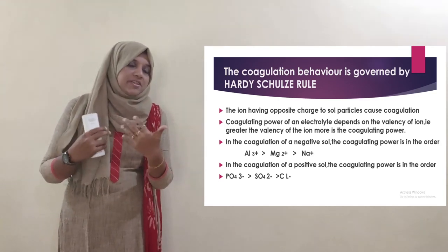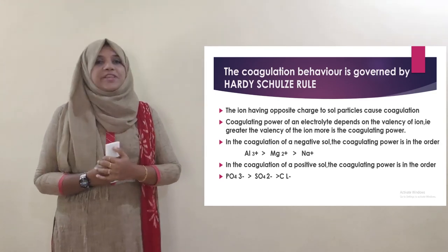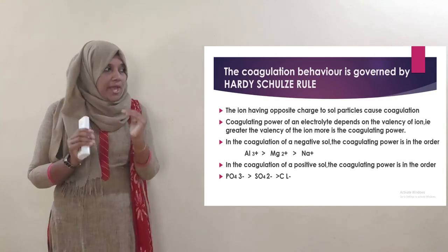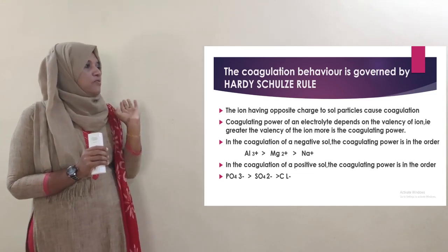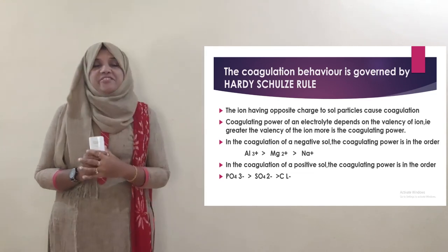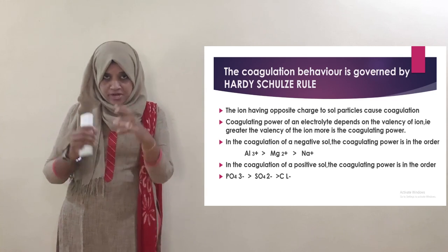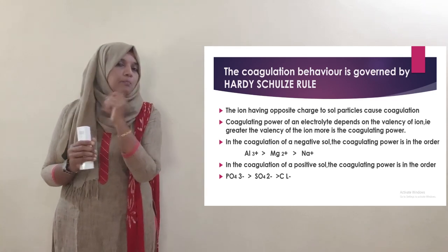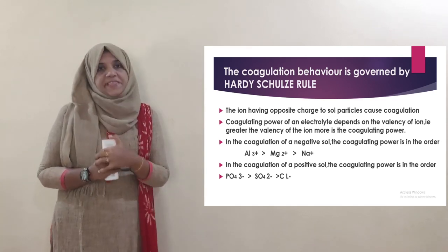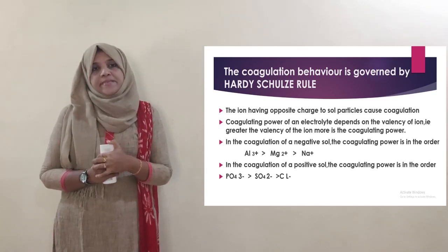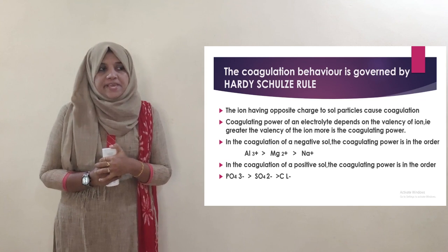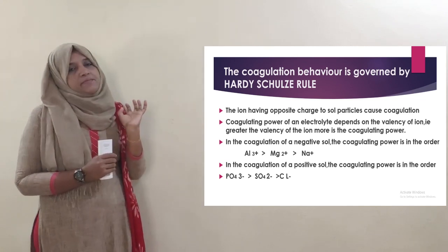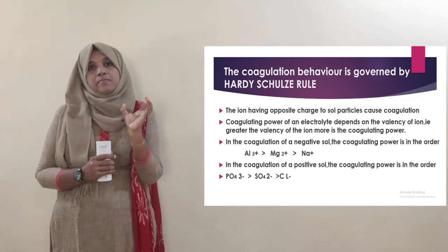The coagulating power of an electrolyte depends on the valence of the coagulating ion. Higher the valence of the ion, greater is the coagulating power.